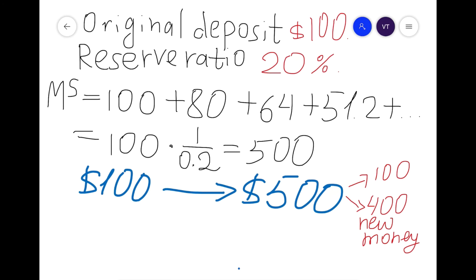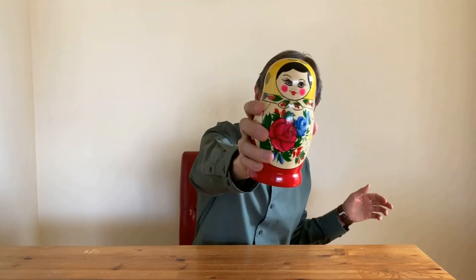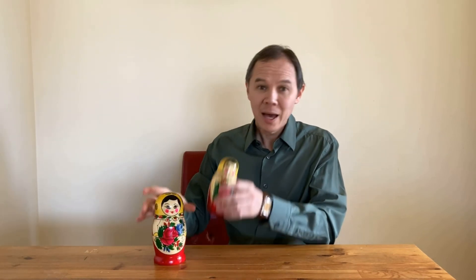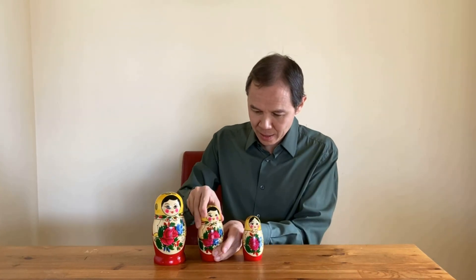In other words, in this economy $1 creates $5. Money creation is like a Russian doll — matryoshka. A new deposit comes in, the bank takes a reserve and lends the rest. That loan becomes a deposit at another bank, which also takes a reserve and lends the rest, and so on.